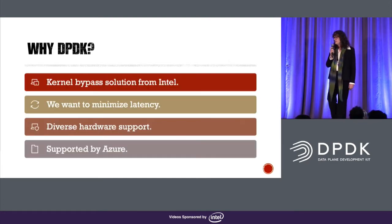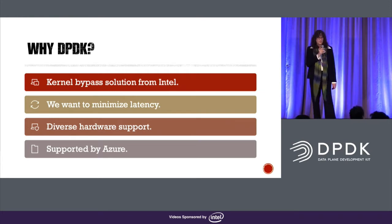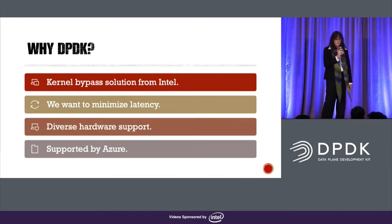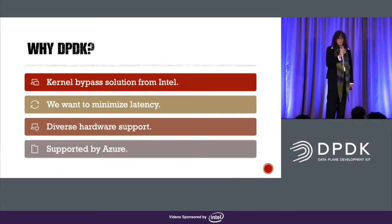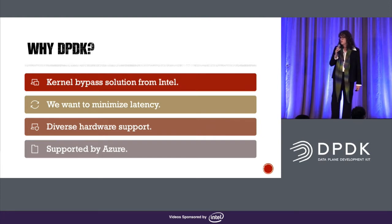So why are we interested in DPDK? Well, DPDK, as everybody here knows, is a kernel bypass solution from Intel. We want to minimize latency. DPDK offers diverse hardware support, and it's supported by Azure, which makes it a very practical target for us.